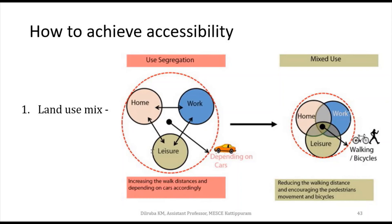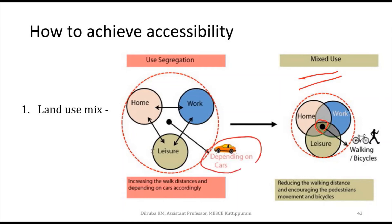So how can we achieve accessibility? Land use planning is a major part that provides accessibility. When we plan for land use, we must consider the accessibility point — we should use the land for mixed use: home, work, and leisure should all be within reach, so that people don't have to depend on their car for each destination. If they can walk to work or leisure, there is no need for cars.